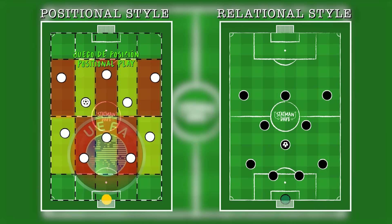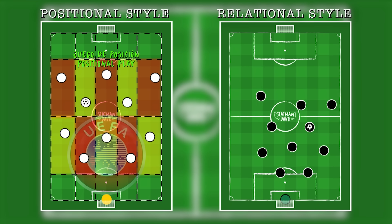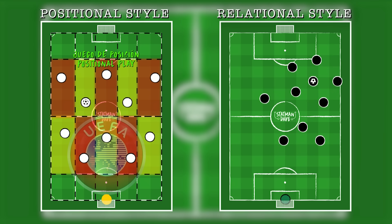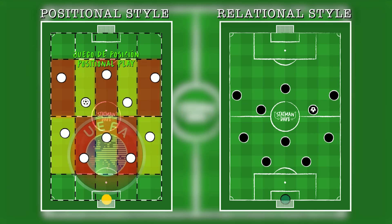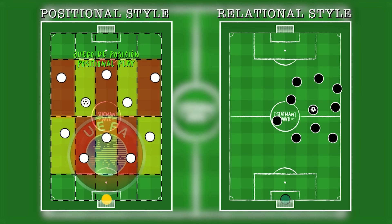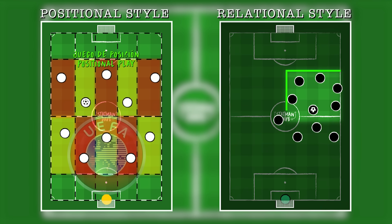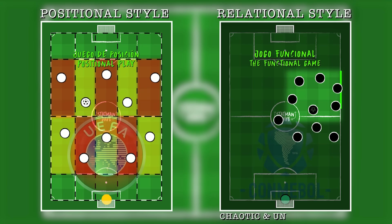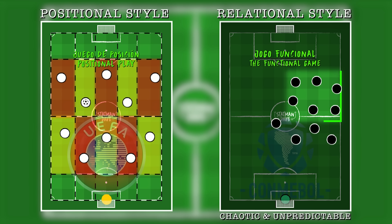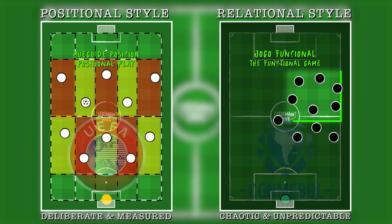Meanwhile, a relationist approach sees players move towards the ball, creating and exploiting space through their actions. This approach will still see an initial structure, but there's a lot more freedom to roam in order to create overloads around the ball. Unlike positional play, space in a relationist team is a lot more varied and depends on the pitch or game state. This is a South American approach commonly known as jogo funcional, or the functional game. Relationalism is a lot more chaotic with simultaneous moving parts as players create space in the chaos of their interchanges, whilst positional play is much more deliberate and measured.